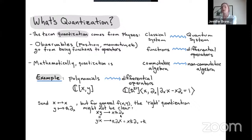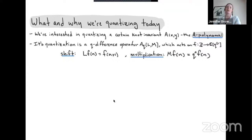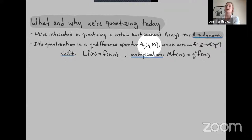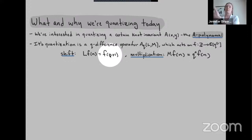Today we're interested in quantizing a certain knot invariant called the A polynomial — a polynomial in two variables where A stands for affine. Its quantization is going to be a q-difference operator A_q(L, M). The operators L and M act on functions with integer coefficients valued in Laurent polynomials: L is a shift operator where L(f)(n) = f(n+1), and M is a multiplication operator where M(f)(n) = q^n · f(n).